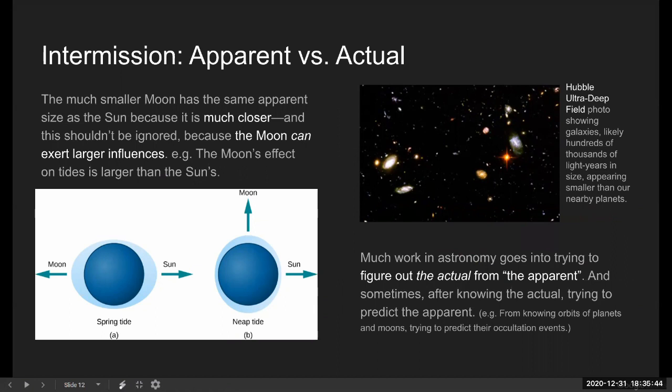It takes building a model, testing predictions of the model. And from the philosophical point of view, what I want to highlight here is that much work in astronomy still goes into trying to figure out the actual from the apparent.